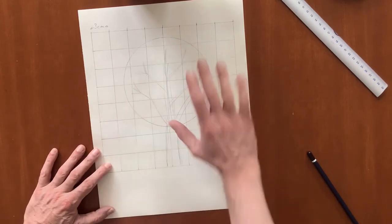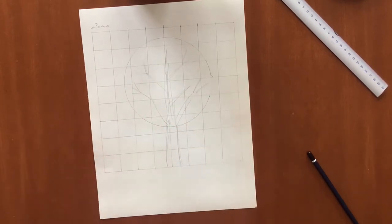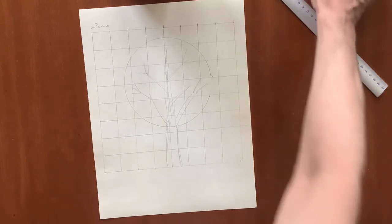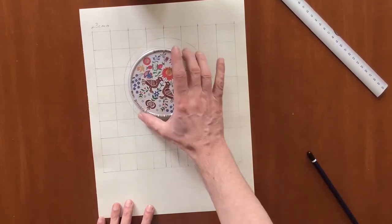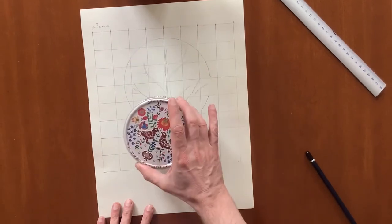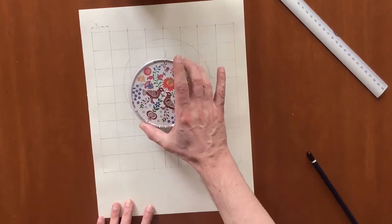And when you have drawn the grid, the next thing to do is to draw a circle roughly in the middle. You can use a lid, or a saucer, or anything round to do this.